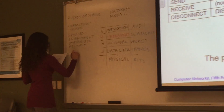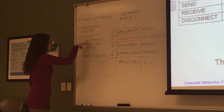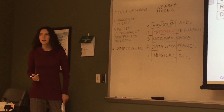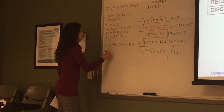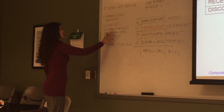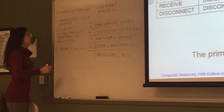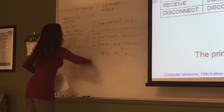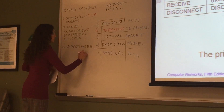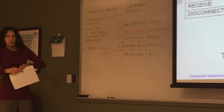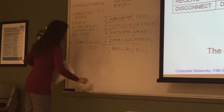We also have connectionless service, where these phases are not implemented for us, but we have the chance to implement our own connections if we want to. This is much faster because there is no overhead of these connections. In connection-oriented service we have the Transmission Control Protocol called TCP, and in connectionless we have the User Datagram Protocol called UDP, which is the topic we will be talking about in the second half of the class.